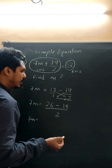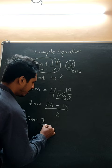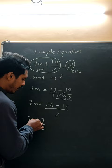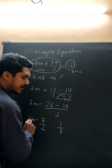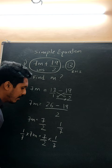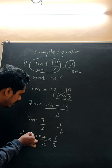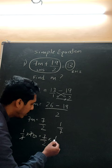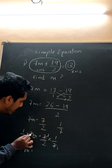Now, how to find the value of m? We have two methods. We multiply by 1 by 7 on both LHS and RHS to cancel the 7. So 1 by 7 into 7m equals 7 by 2 into 1 divided by 7. The 7 in the numerator and the 7 in the denominator cancel out, leaving only m on the left side.